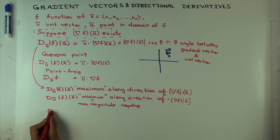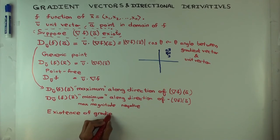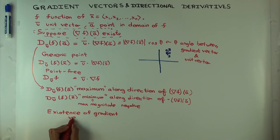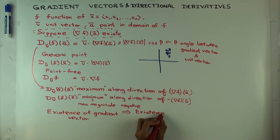So existence of gradient vector, which just means that the function is differentiated, right? Because the gradient vector is the derivative. So existence of gradient vector implies existence of directional derivatives in all directions.